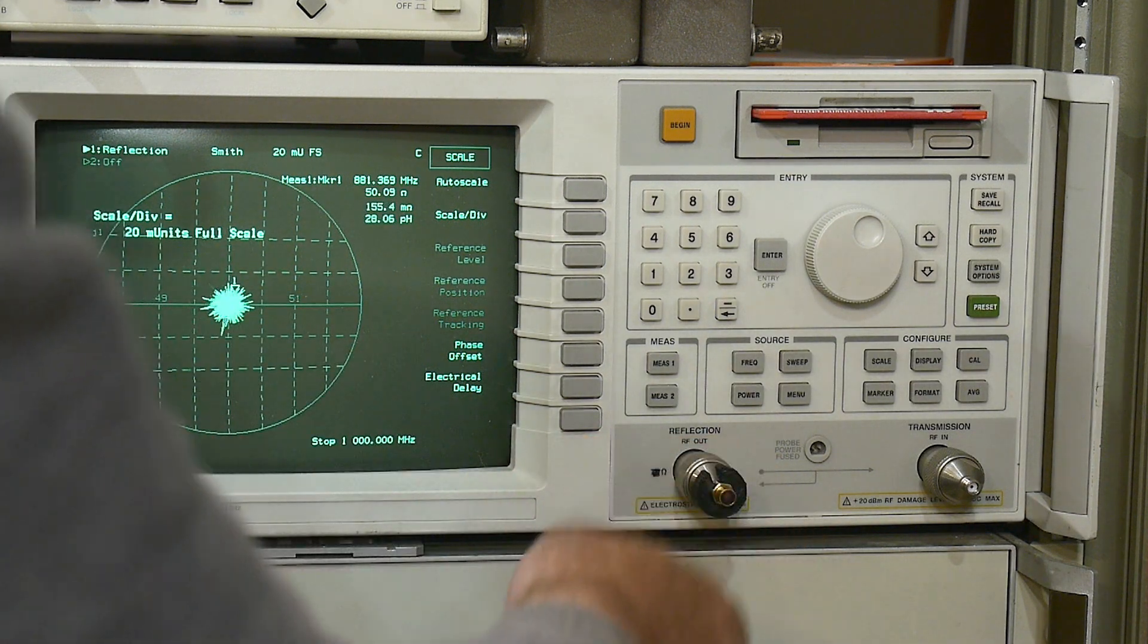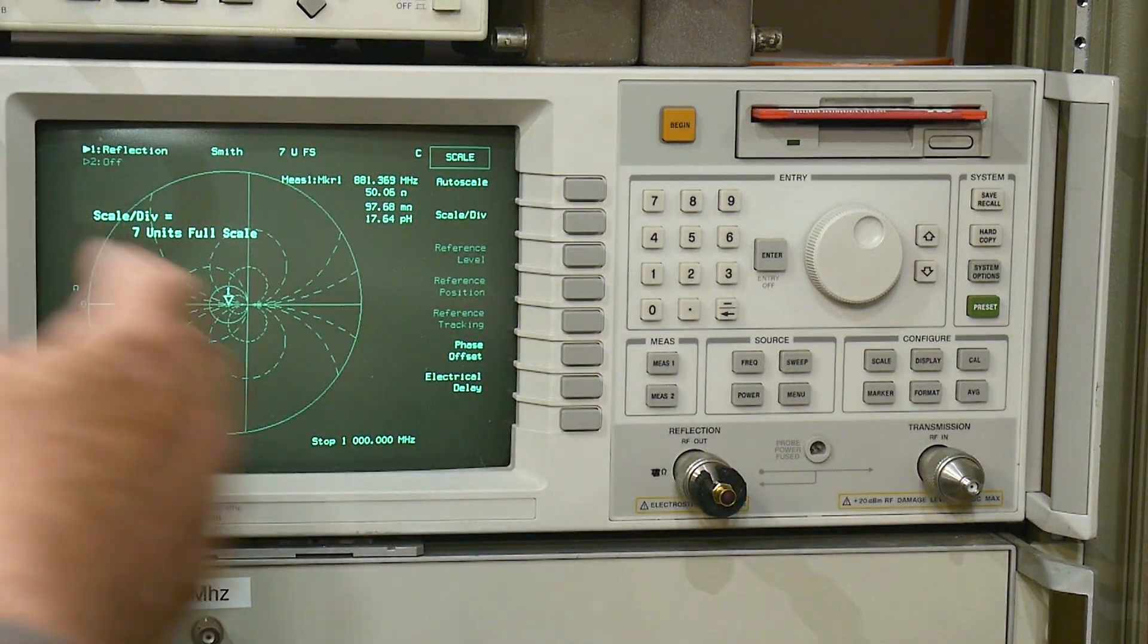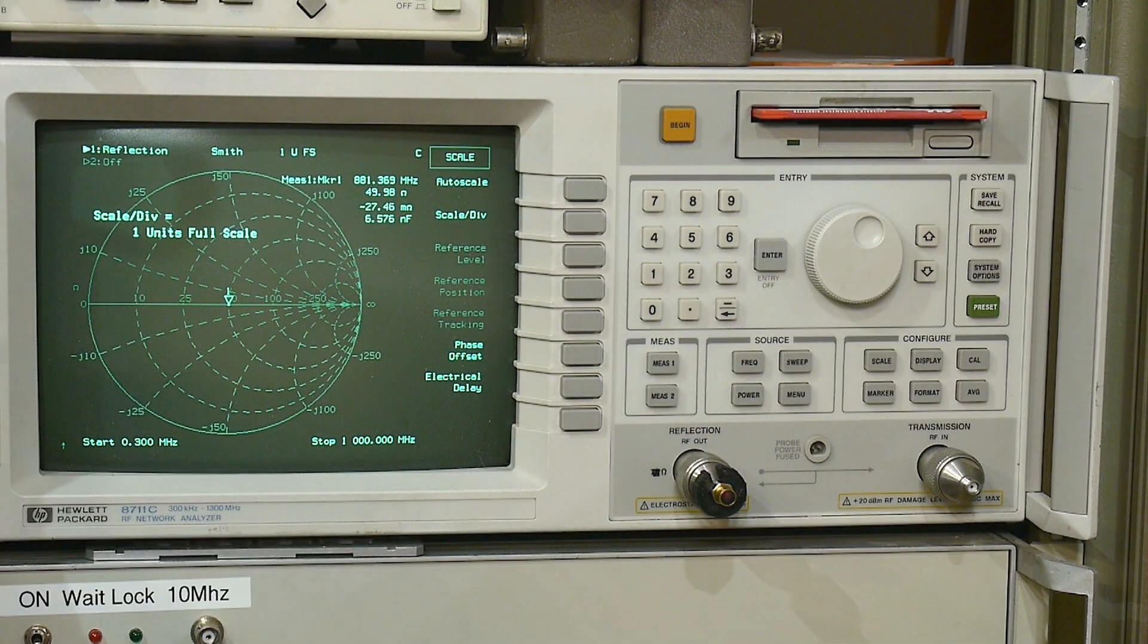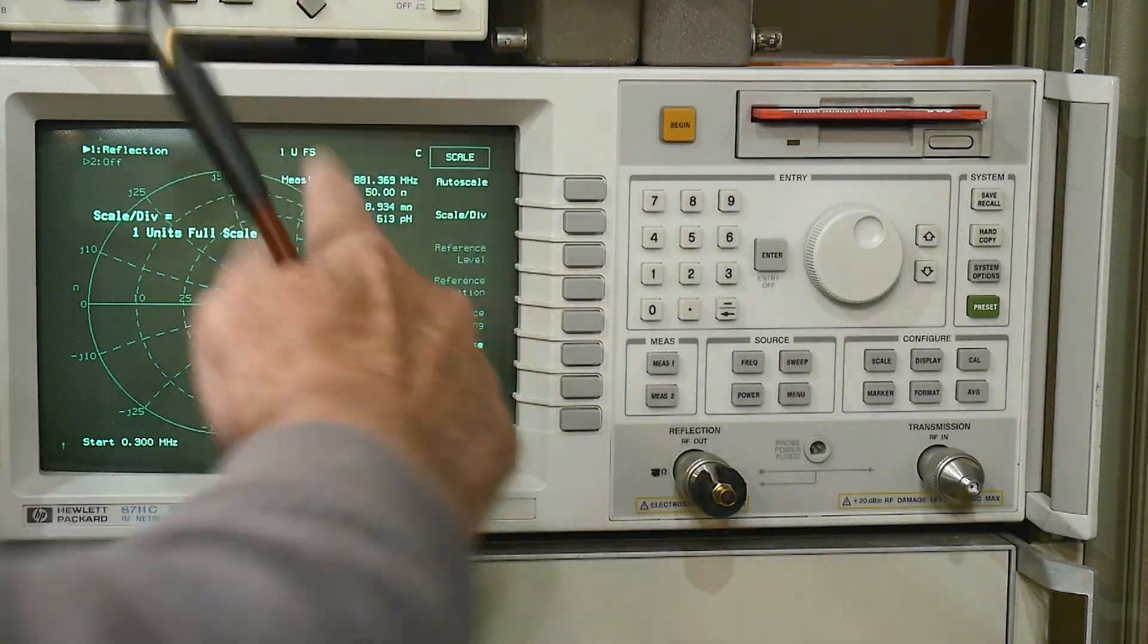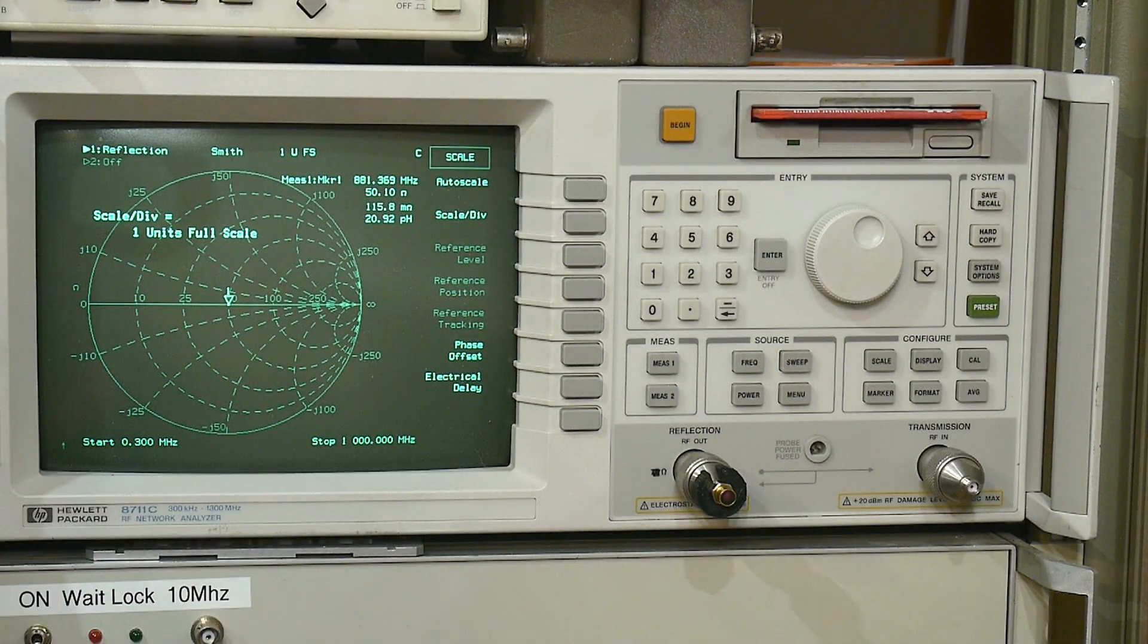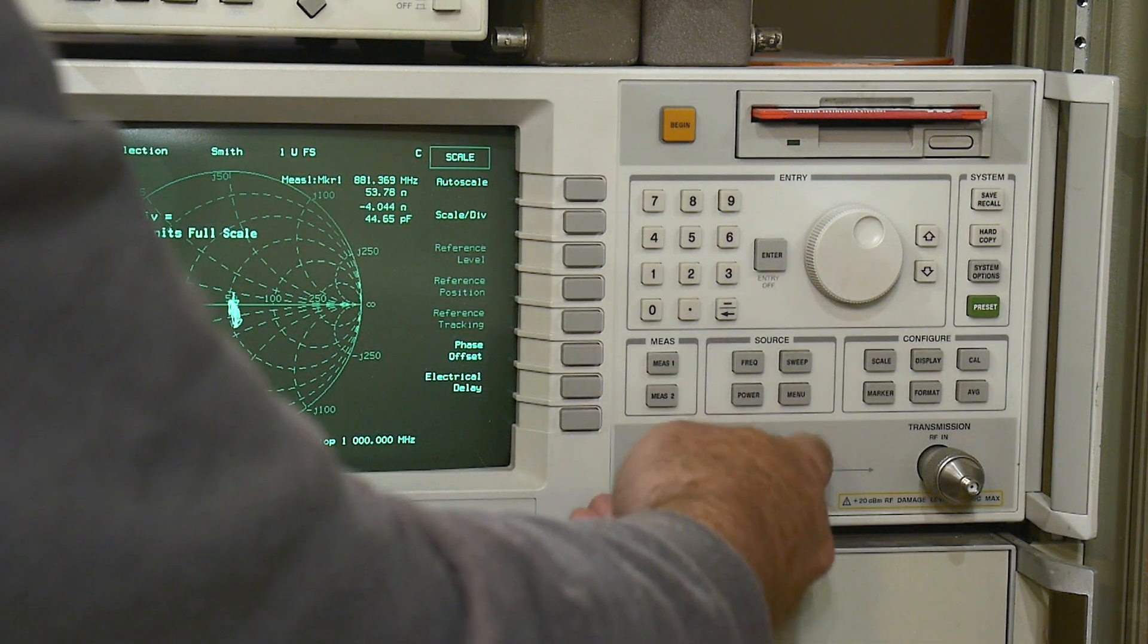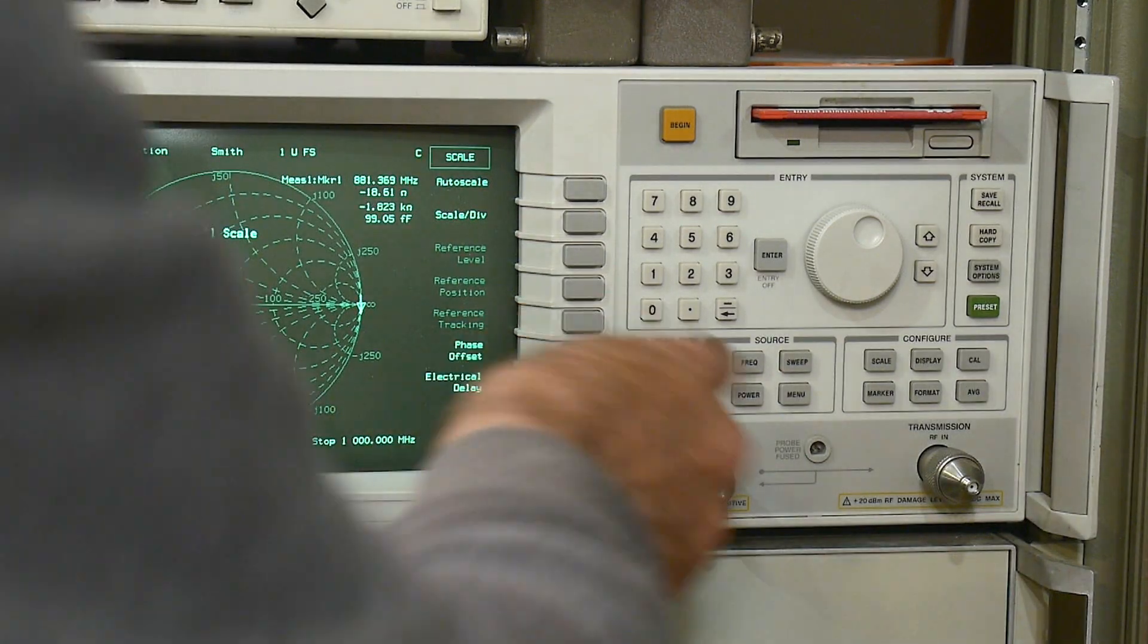Now let's do a scale here. In theory, a 50-ohm transmission line in a 50-ohm system shouldn't mess up anything. It should add phase, but it shouldn't mess up anything else. So I'm going to put on a 50-ohm cable.